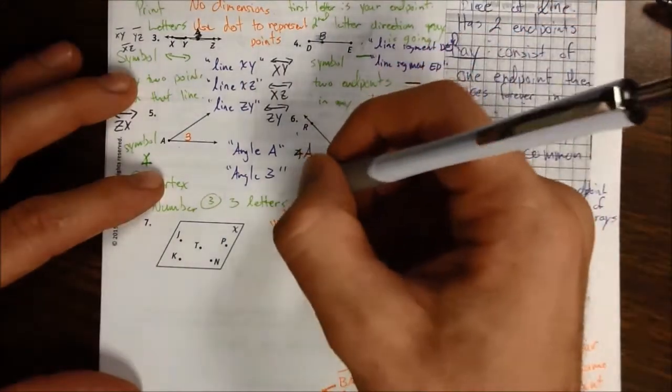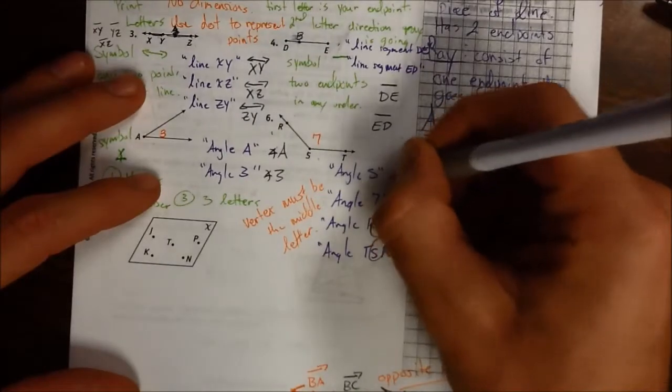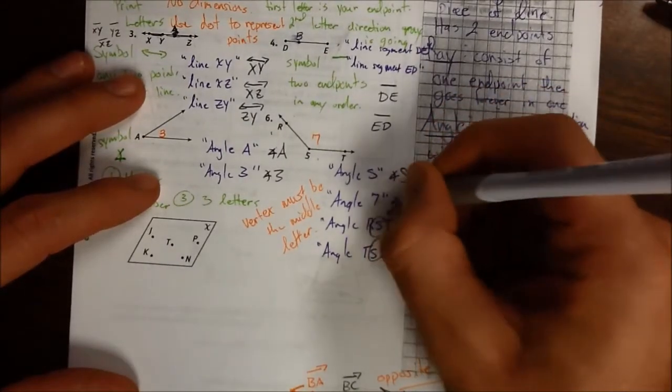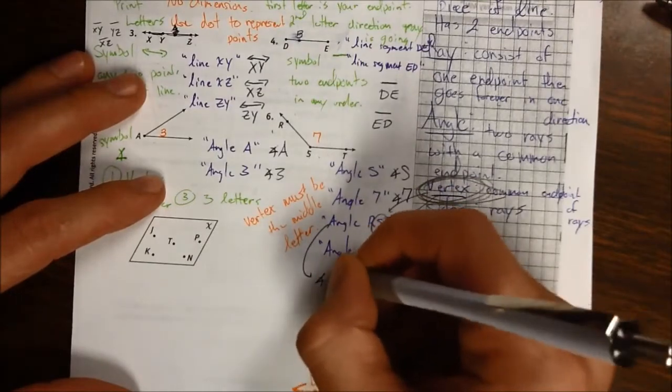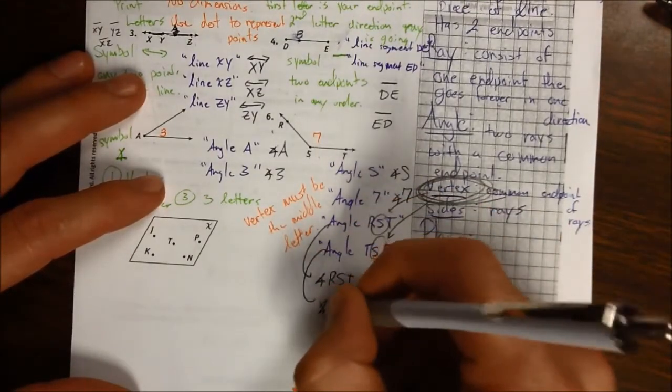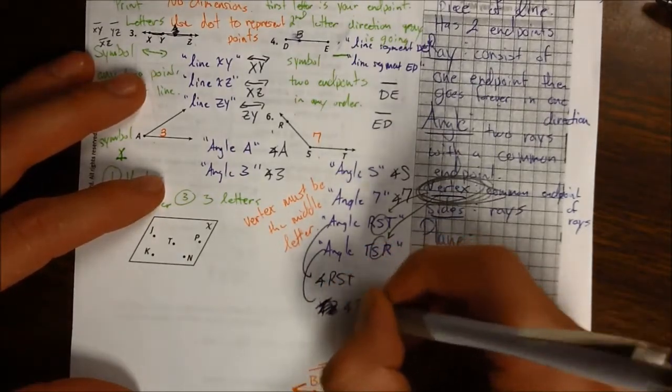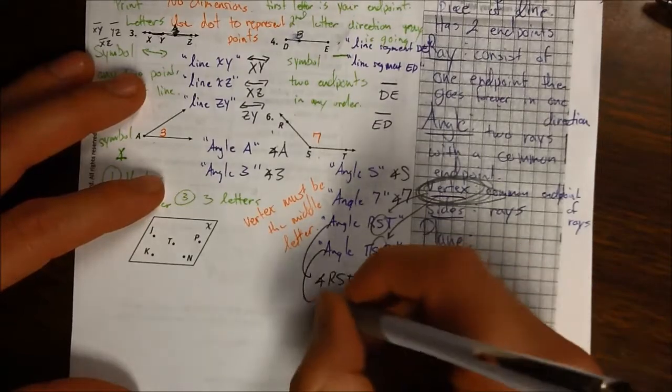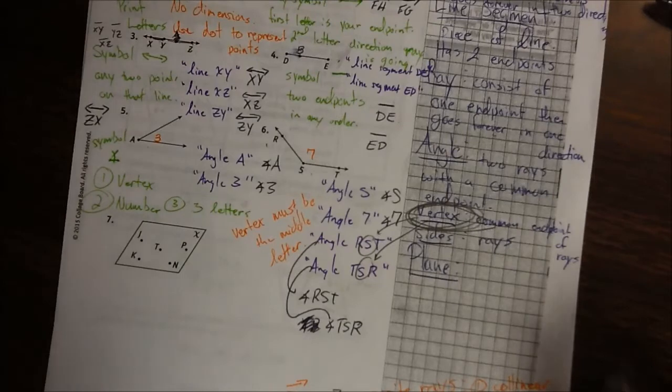So you would write for this angle A. This one would be angle 3, this here would be angle S, this is angle 7, down here this is angle RST. Over here is angle TSR. All right.